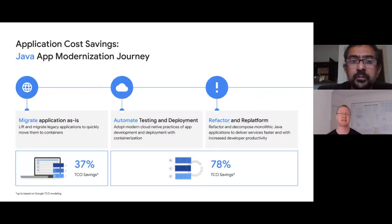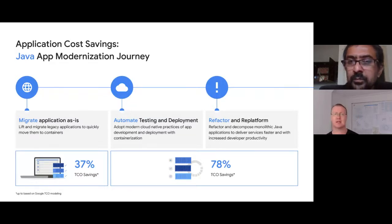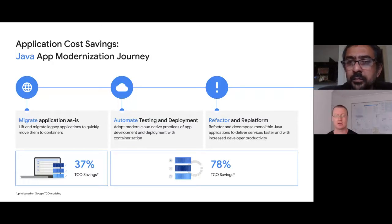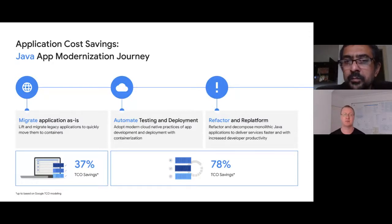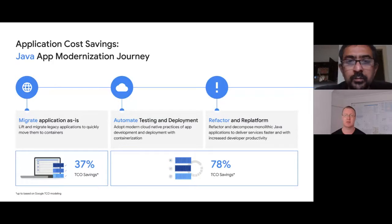Let's take Java as an example — it's very topical for a lot of organizations because it's prolific across pretty much every industry. Java on virtual machines can incur quite a bit of cost, so many organizations are asking how can we do Java more cost-effectively? Moving Java to containers and Kubernetes is typically one very easy workload to move. You've got a number of different approaches: you could lift the legacy application as-is, move it into containers, and get around a 37% TCO saving. But if you can automate testing and deployment and refactor the monolithic Java apps into microservices, improving density, efficiency, and scale, you're likely going to see figures of around 78% TCO savings.